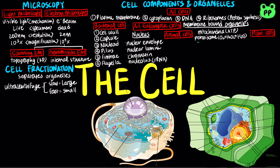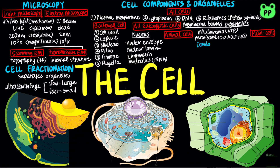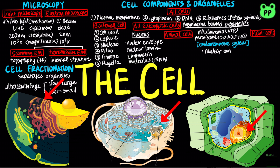Animal and plant cells also contain the endomembrane system, which is a group of membranes and organelles that works together to modify, package, and transport lipids and proteins. The components of the endomembrane system are either continuous or connected through transfer by vesicles. The endomembrane system starts with the nuclear envelope, which is continuous with the endoplasmic reticulum, or the ER.